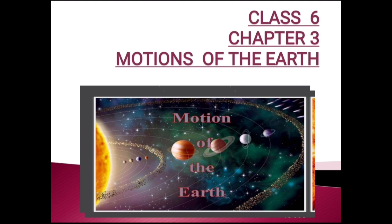Motion means moving. When the sun disappears, we say the sun sets, and when the sun emerges, we say the sun rises. Students, we are least aware that the sun in fact neither rises nor sets. The sun is stationary — meaning it is not moving. So, the sun is a fixed heavenly body and the earth is moving constantly around the sun.